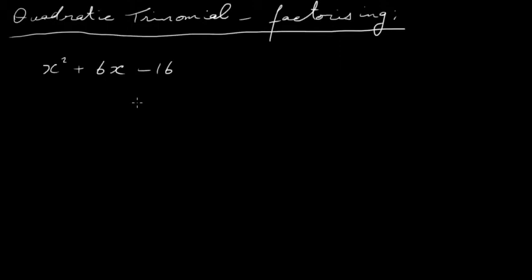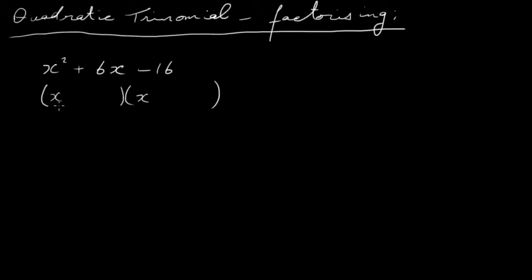First, I'm going to factorize it using a standard method by writing in the two brackets. I'm going to take the x squared term and factorize it as just x times x — that's the only way you can factorize x squared, by multiplying x by x.